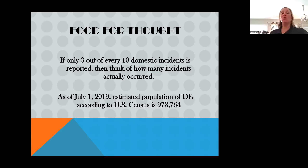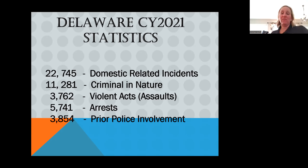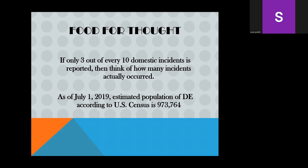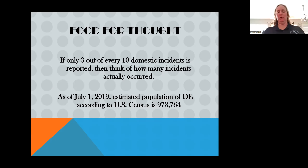Think about this: if only three out of every ten domestics are reported, think about how many actually occur. Almost 23,000 were reported — think about how many actually occurred in that calendar year. And in 2019, our census was almost a million people.